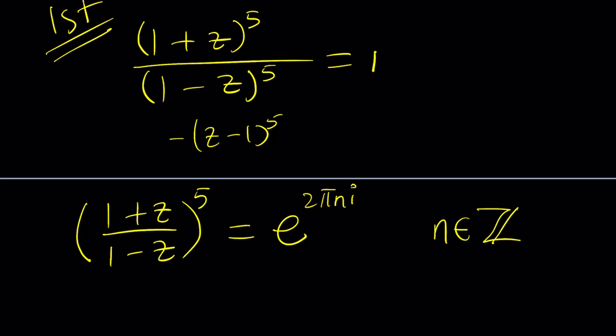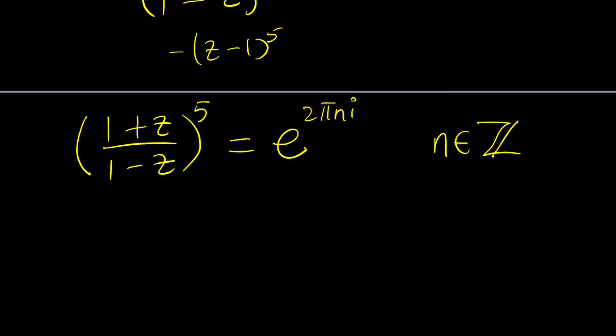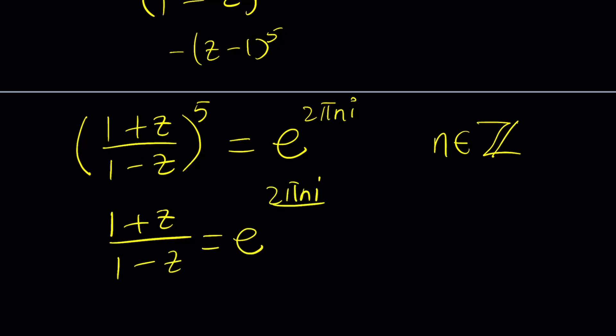Now let's see how we can proceed. We don't need to take the natural log of both sides; instead, let's take the 5th root on both sides — raise both sides to the power 1 over 5. That gives us 1 plus z divided by 1 minus z equals e to the power 2πni over 5. This is what's so cool about polar form thanks to Euler — we can easily raise a complex number to any power we want.